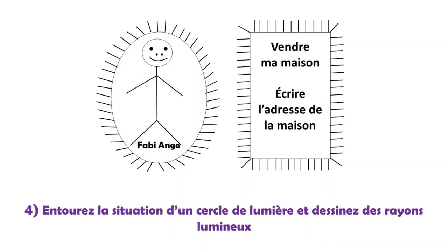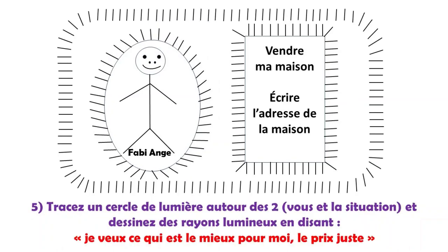Quatrième étape. Je dessine un cercle de lumière bien fermé autour du rectangle avec des rayons lumineux. Cinquième étape. Je dessine un cercle de lumière bien fermé autour de nous deux — Fabie Ange et le rectangle avec la situation. Et je dessine des rayons lumineux en disant : « Je veux ce qui est le mieux pour moi, le prix juste. »